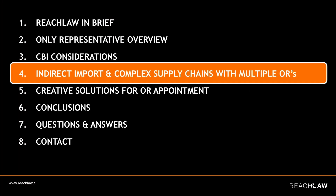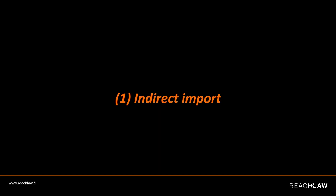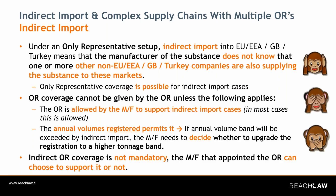Looking at indirect import and complex supply chains with multiple ORs cases. Those will be fairly complicated slides, so please bear with me. The indirect import is a bit simpler. We will start with indirect import. Under an only representative setup, the indirect import into a said market means that the manufacturer of the substance does not necessarily know that one or several other companies outside of this said market — for example, the EU — is also supplying this particular substance to this market. We'll see this in the next slide to explain it more visually.